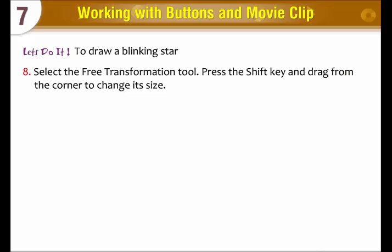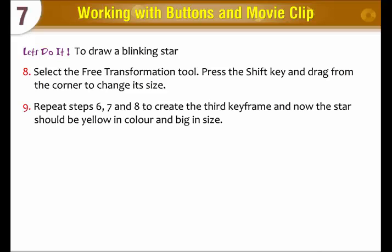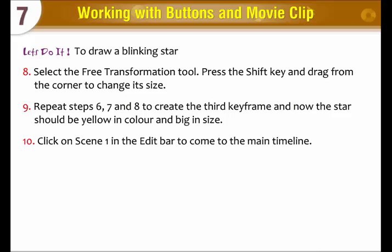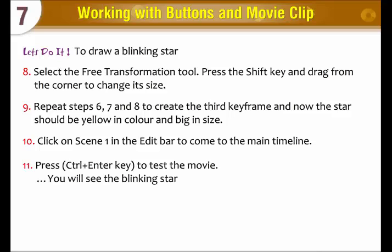Select the free transformation tool. Press the shift key and drag from the corner to change its size. Repeat steps 6, 7, and 8 to create the third keyframe — now the star should be yellow in color and big in size. Click on scene 1 in the edit bar to come to the main timeline. Press Ctrl+Enter to test the movie. You will see the blinking star.